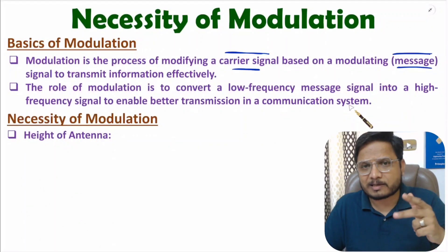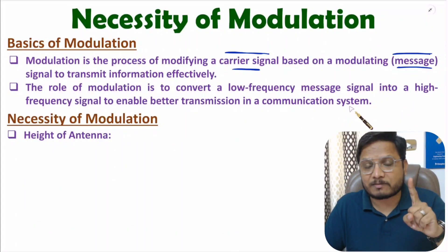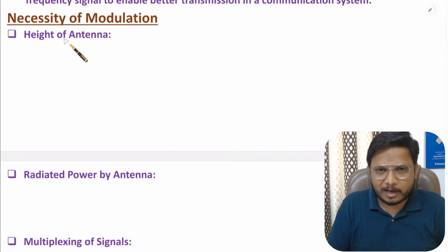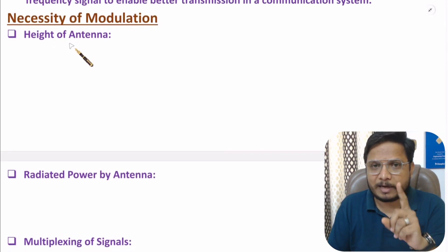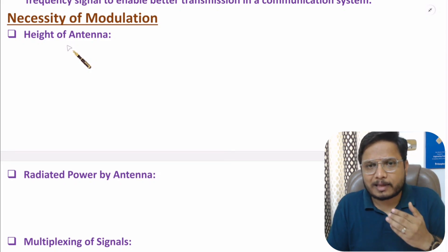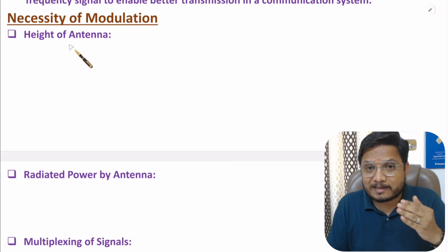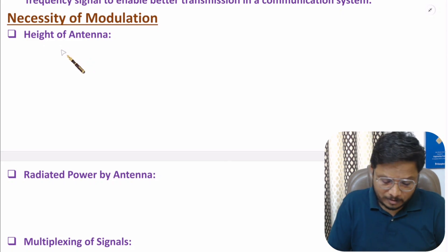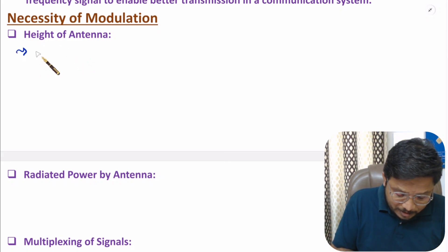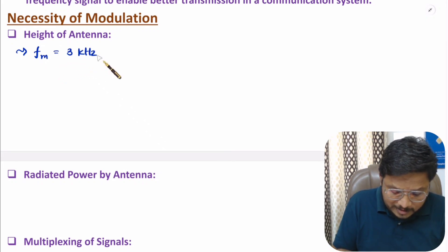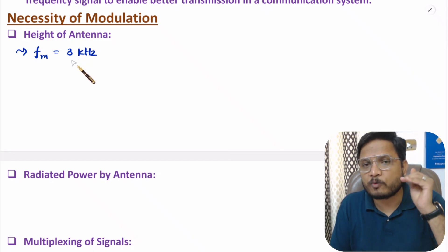Now let me discuss the advantages of high frequency transmission compared to low frequency transmission. The first advantage is based on the height or size of the antenna. For example, consider voice signal transmission. My voice has a maximum frequency of approximately 3 kilohertz, sometimes up to 4 kilohertz.